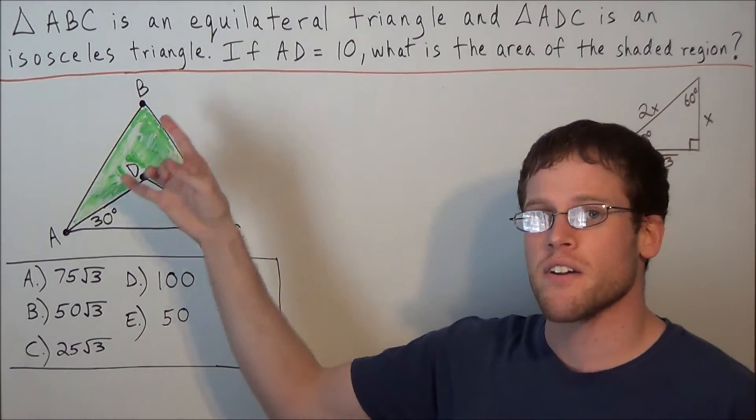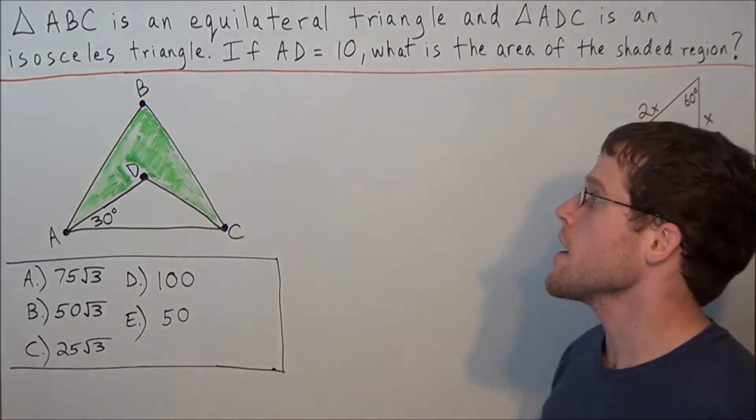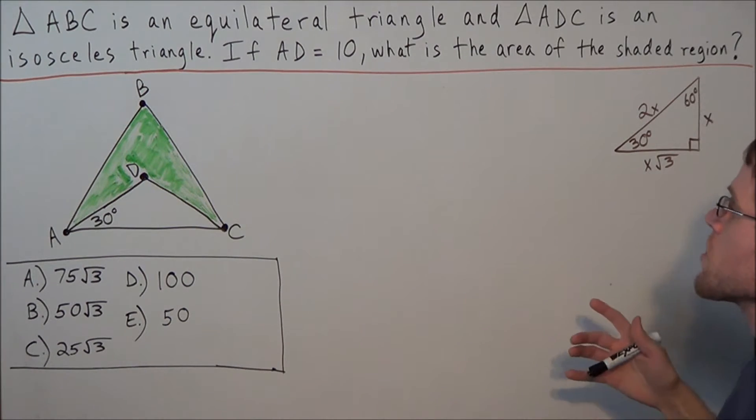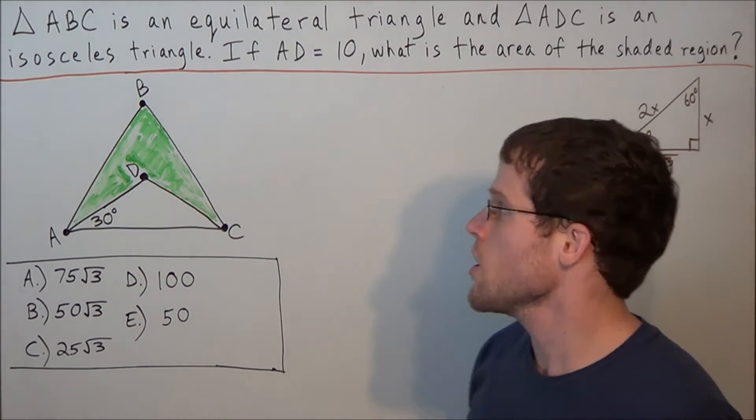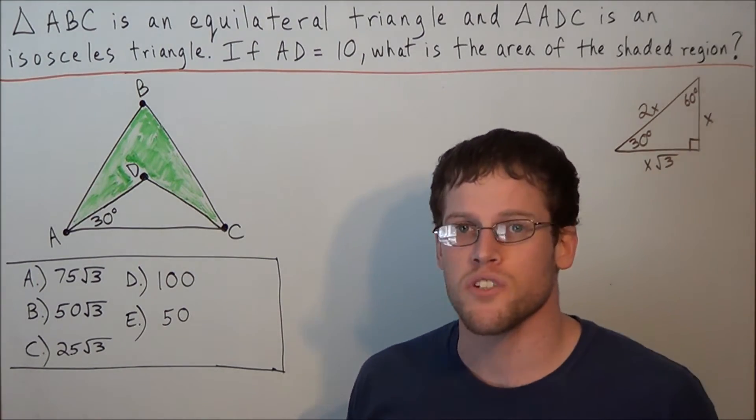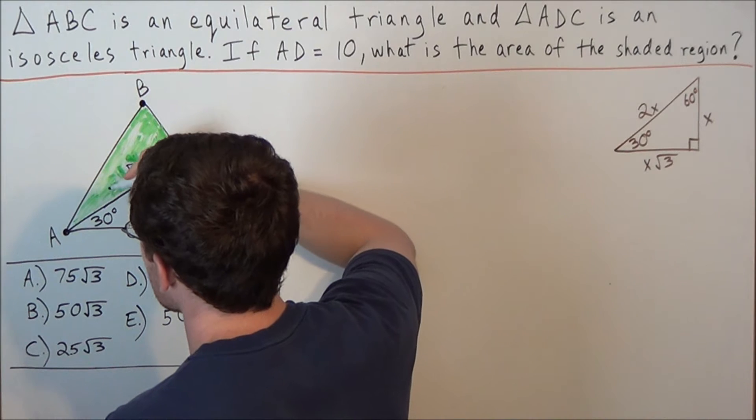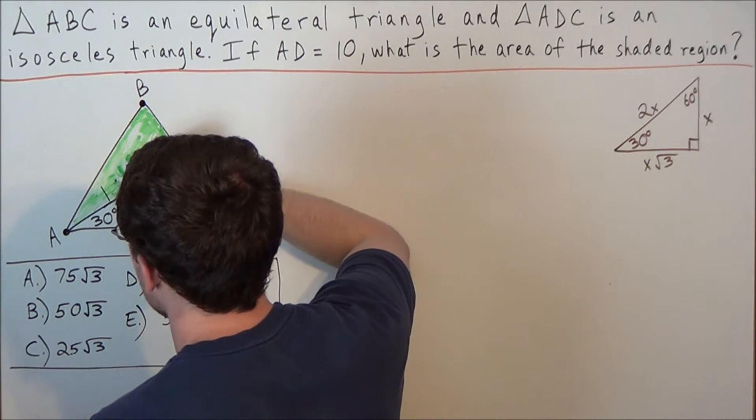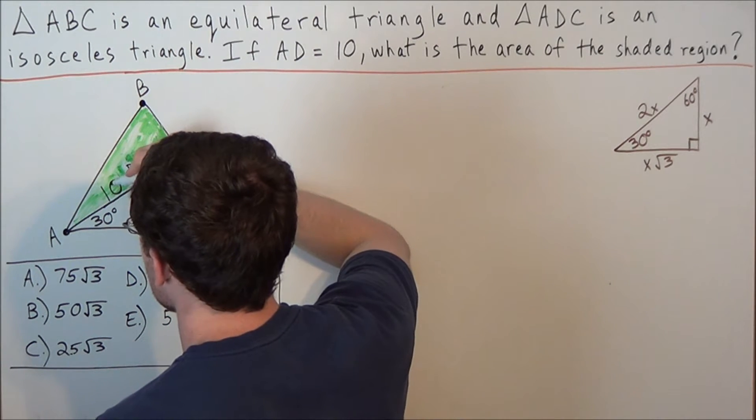We're trying to find the area of this shaded region, colored in green. To do so, we want to make use of the information that was given to us. We were told that AD equals 10, so the first thing we should do is label our diagram. We could label this side AD as being 10 units long.